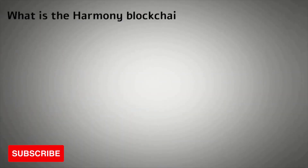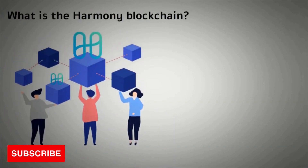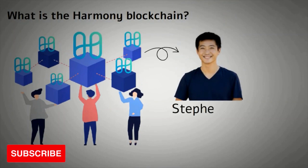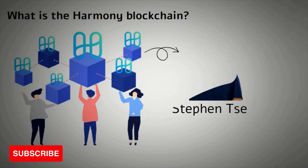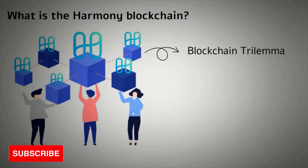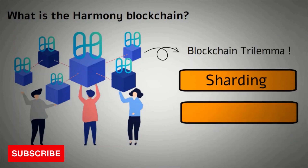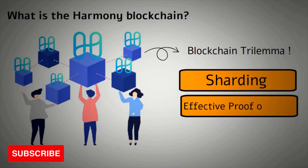What is the Harmony blockchain? Harmony is an effective proof-of-stake blockchain founded in 2018 by Steven Tsai, with a mainnet launch in 2019. Like most post-Ethereum networks, it claims to solve the blockchain trilemma of decentralization, scalability, and security. Harmony's answer to the problem is sharding and its effective proof-of-stake consensus mechanism.